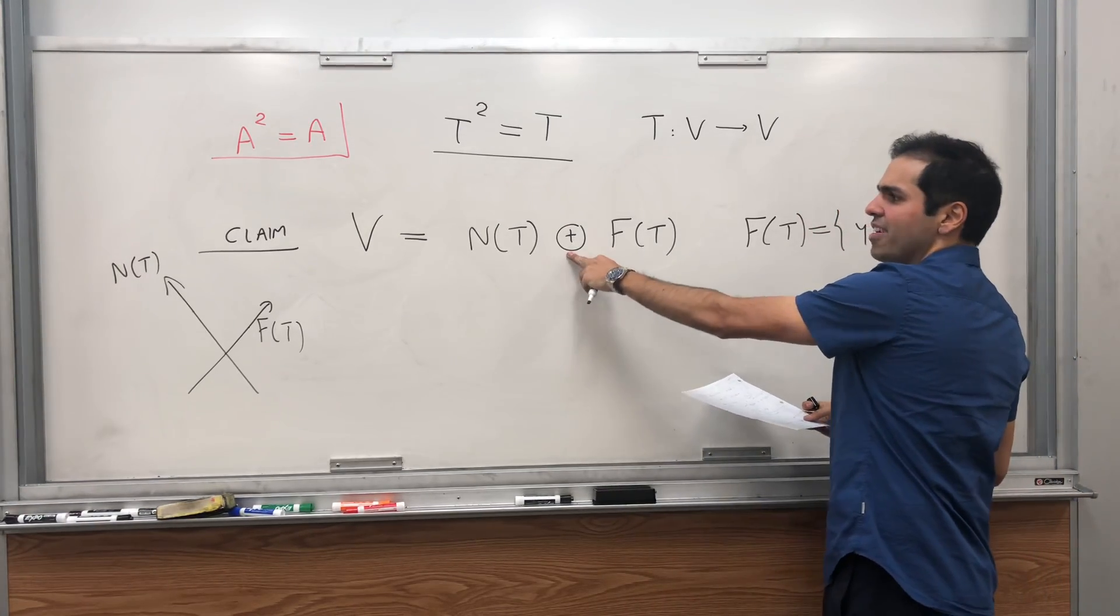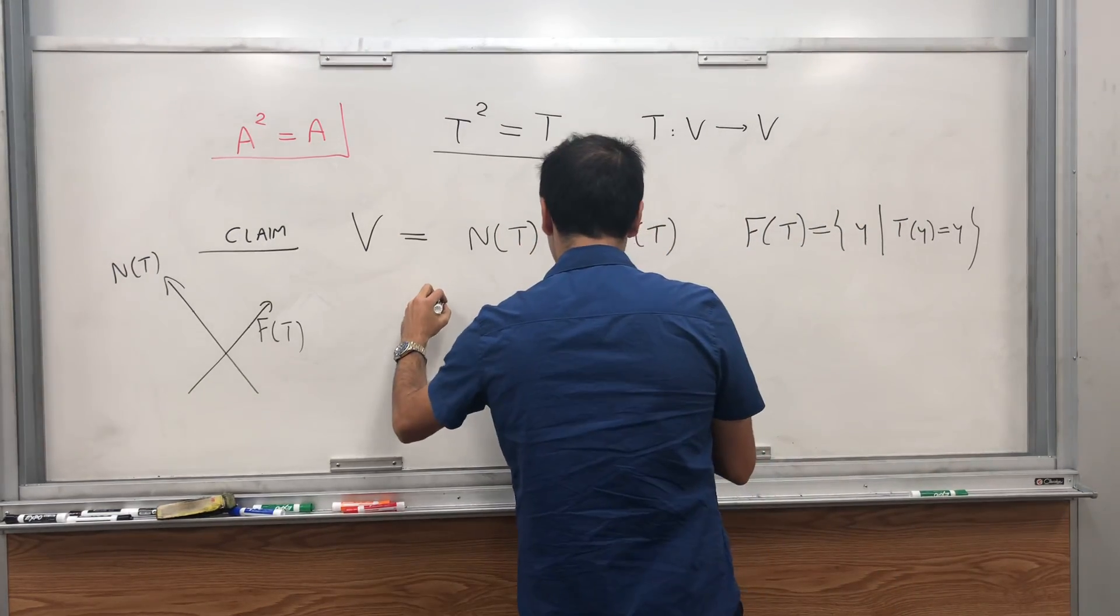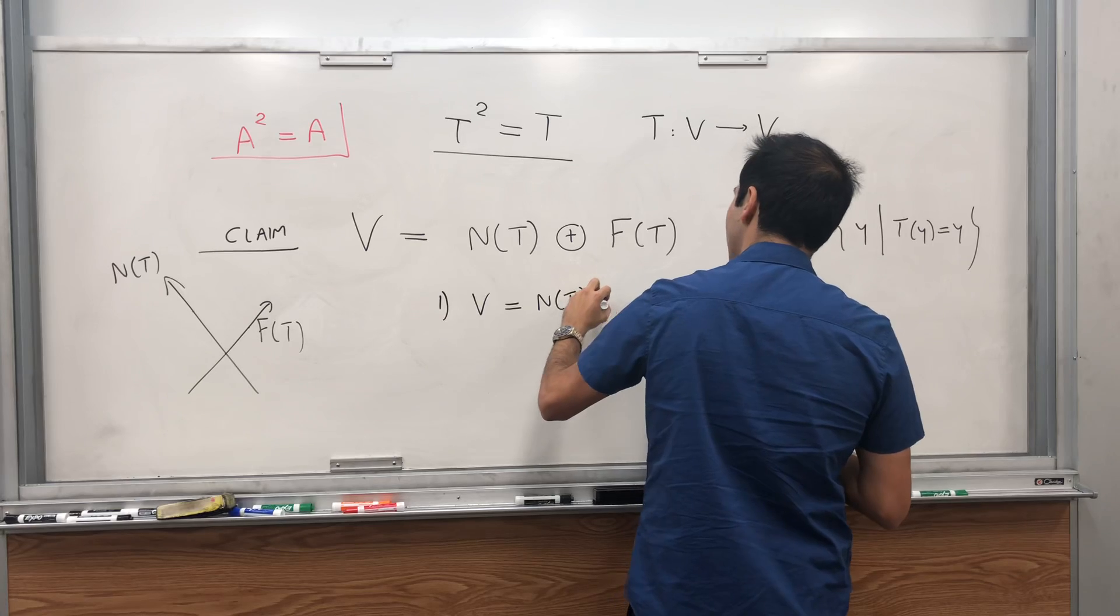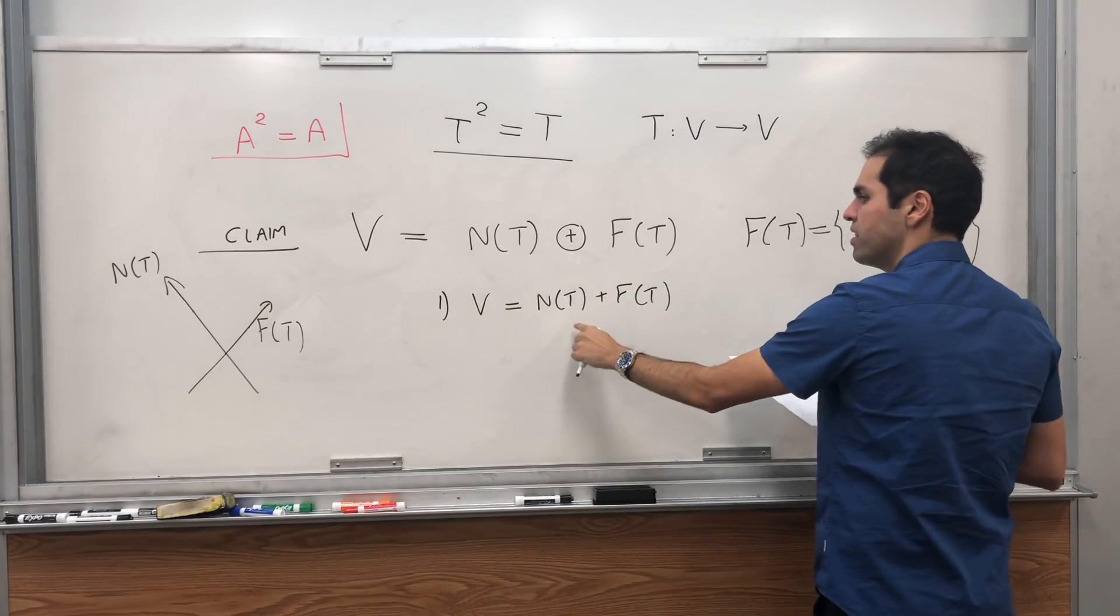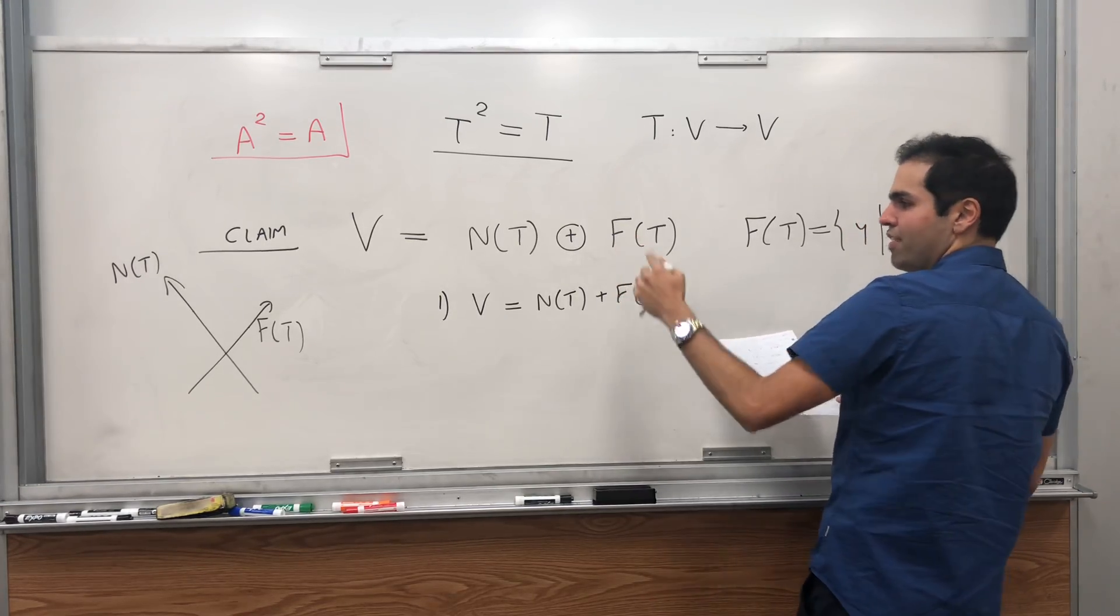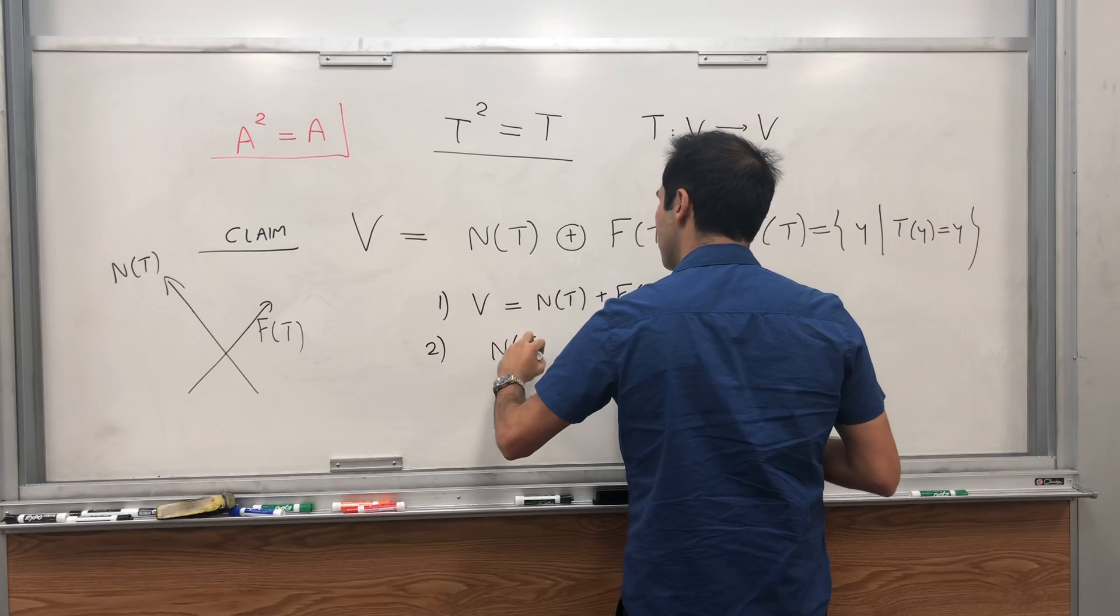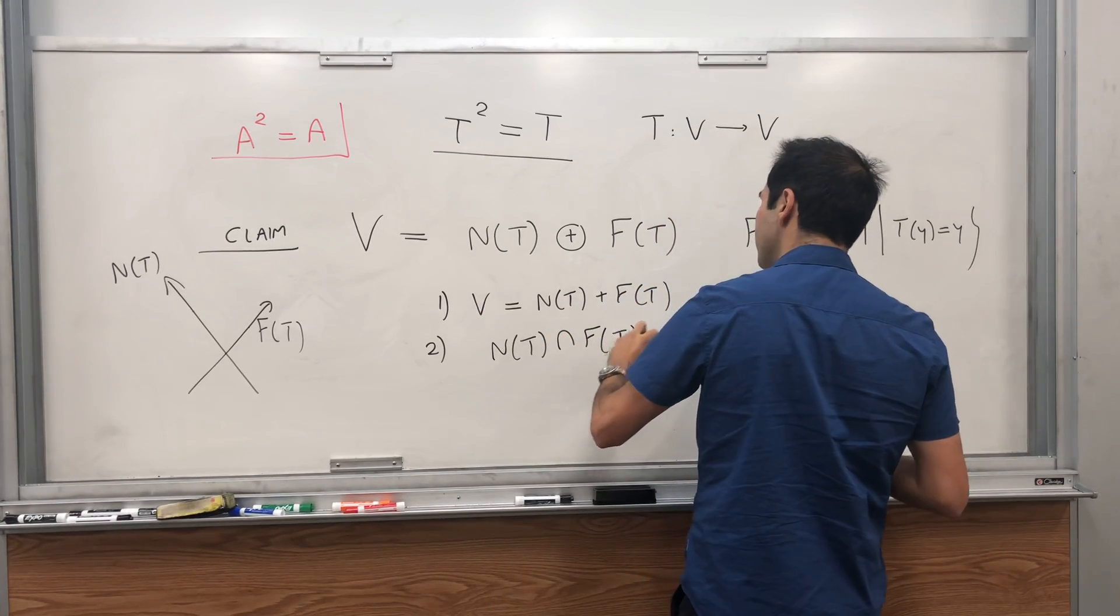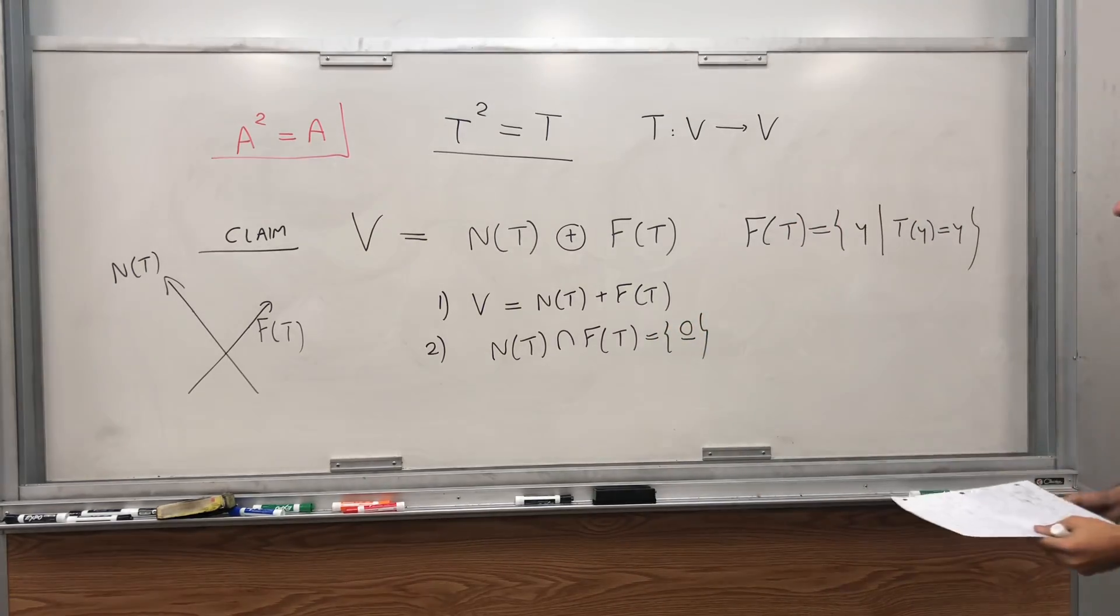Then we can tell you exactly what T just geometrically. Just one little thing, what does this weird circle-plus mean? It means the following, first of all, V is the sum of N(T) plus F(T). So any vector can be written as a sum of a vector in the null space, plus a vector in the fixed point space. And moreover, those spaces, basically their intersection is trivial. So they only intersect in the zero vector.